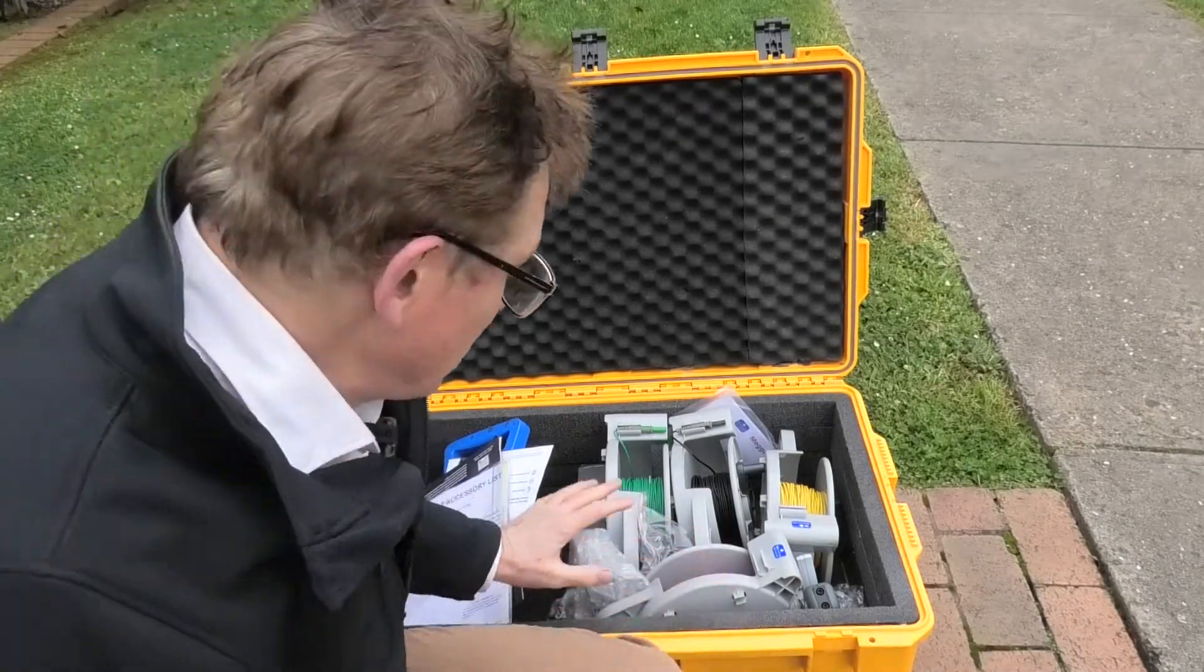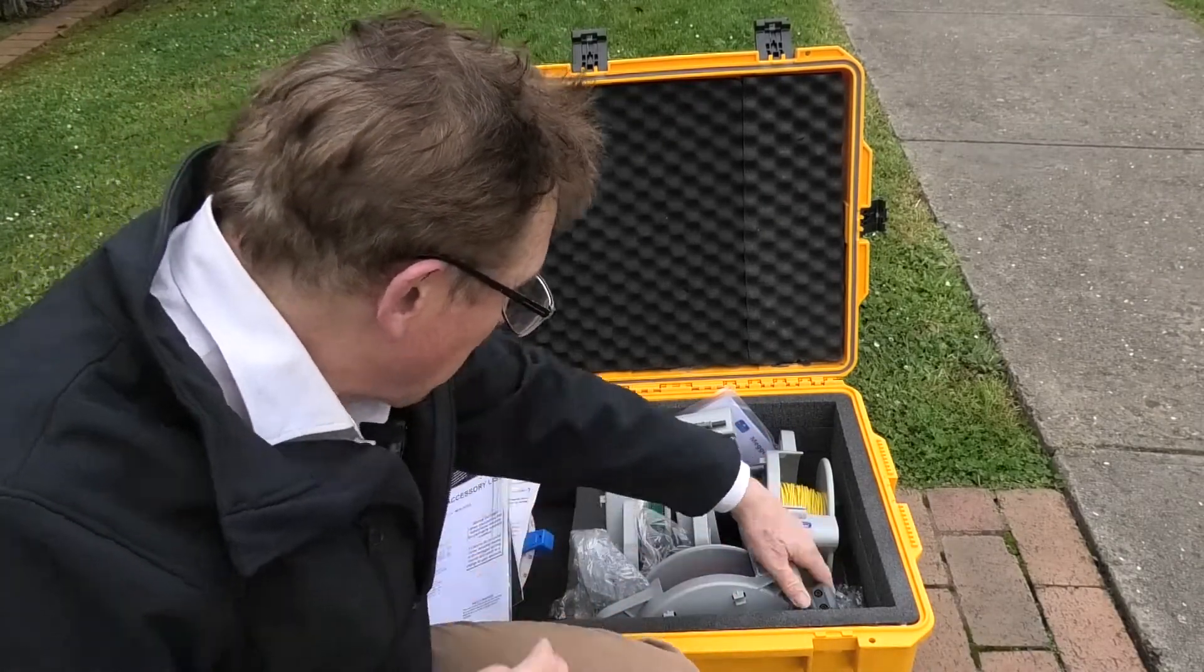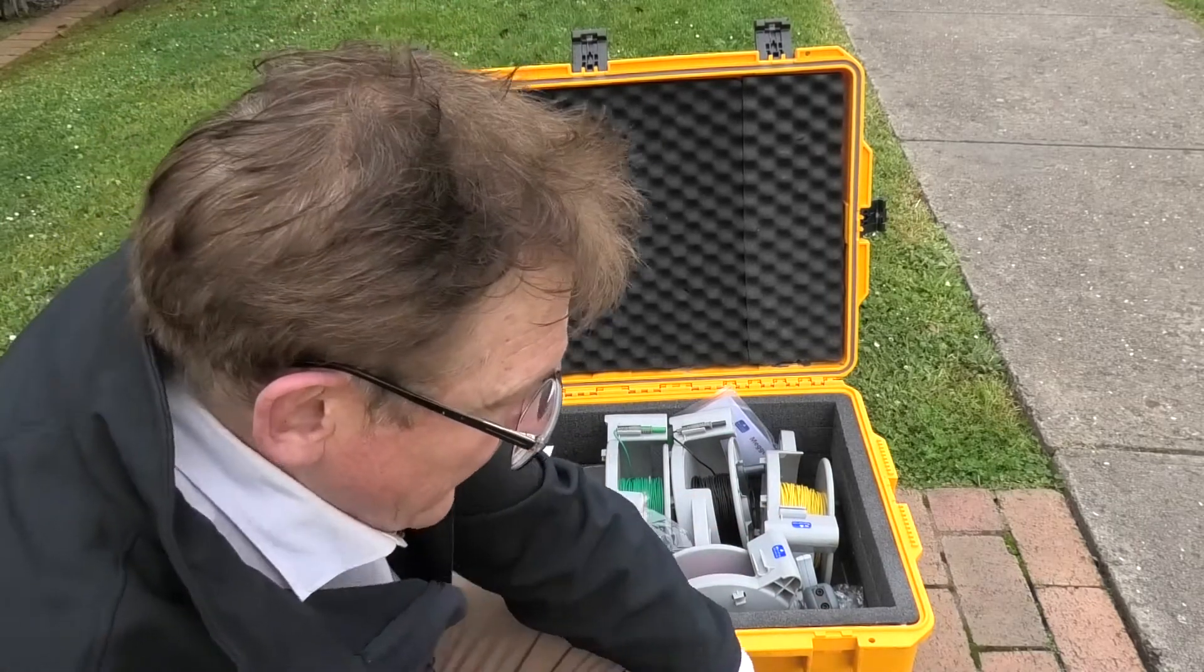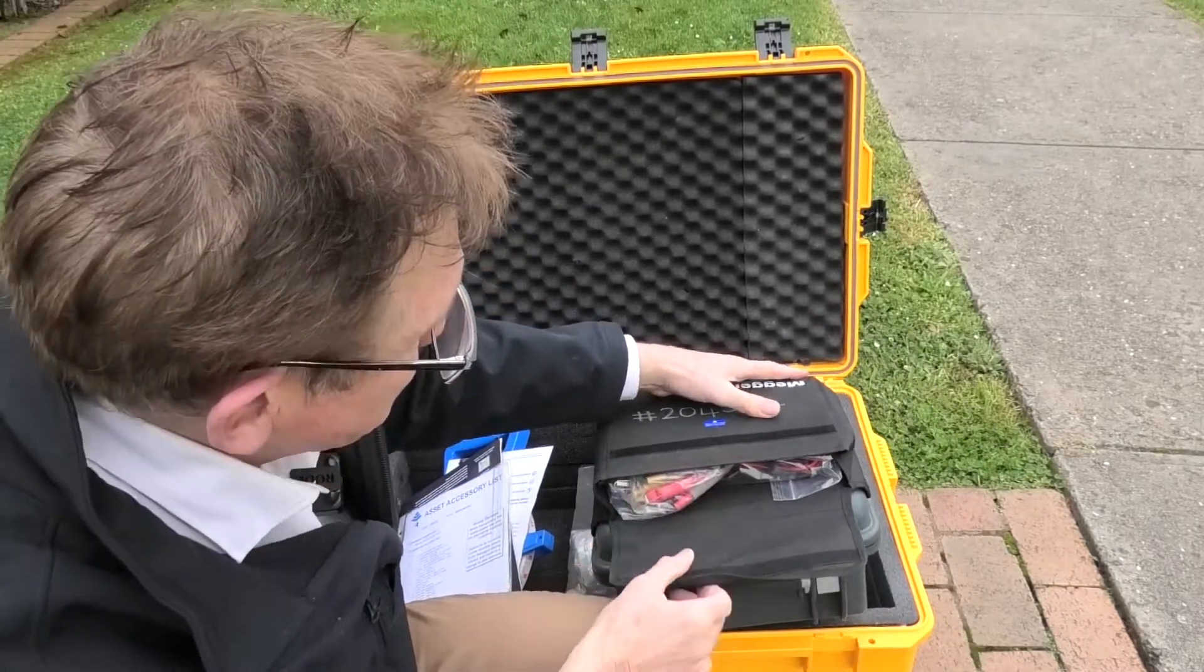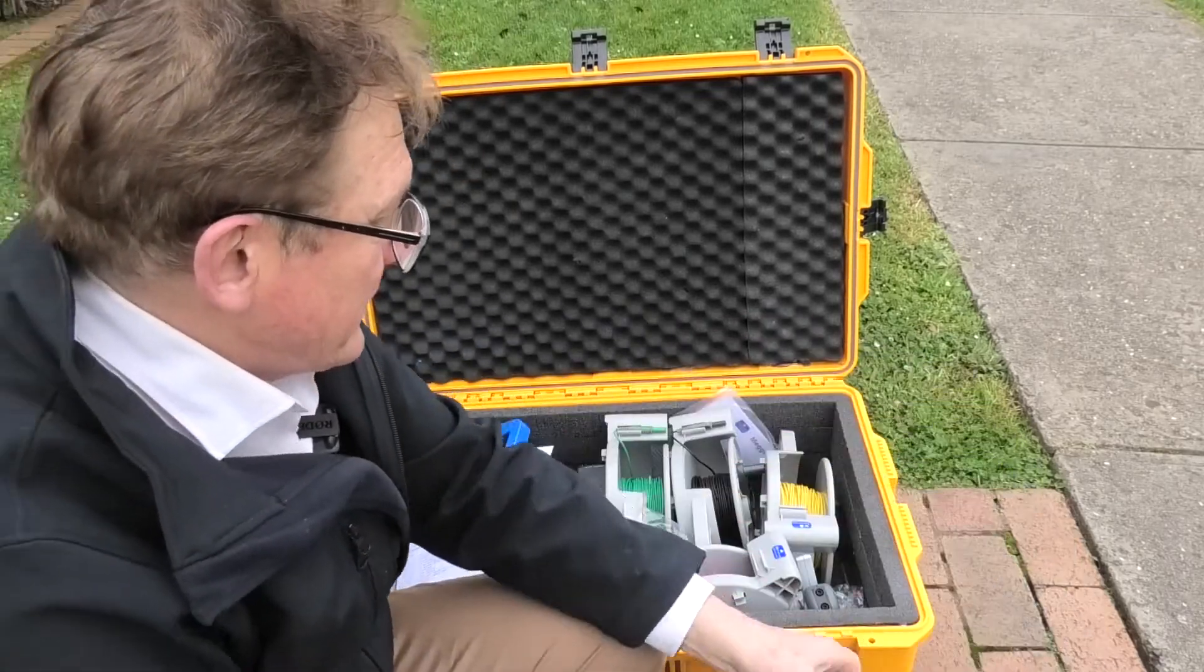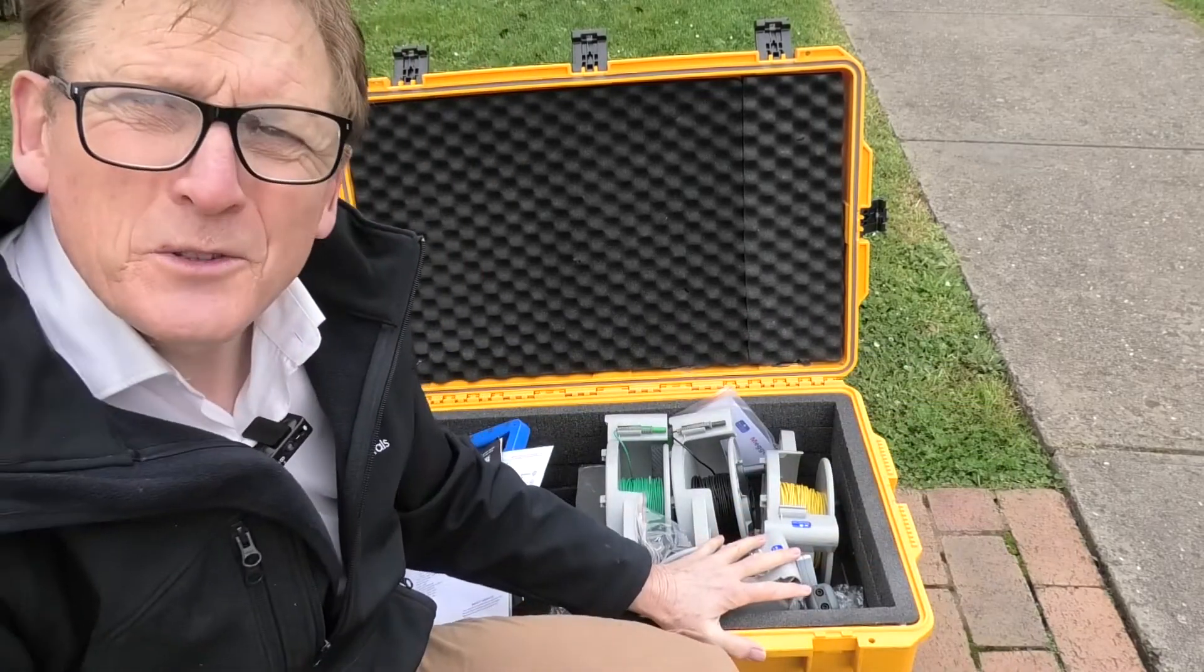Now the kit includes all the appropriate accessories, spikes. There are some of the accessories inside this little bag at the top here, so you've got to look out for those. Everything you need is in this kit to do the Wenner Test.